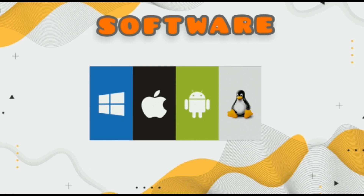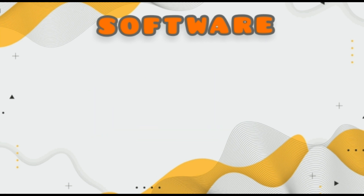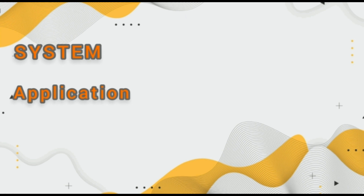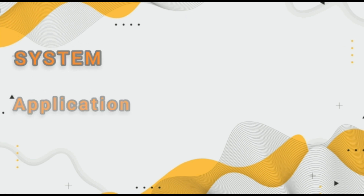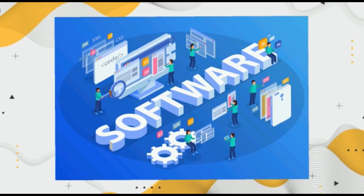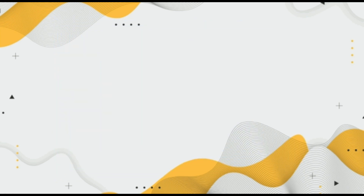Software actually tells the computer what to do. Software can be divided into three kinds: system software, application software, and utility software. When you are listening to music, making a document, or playing games, everything is done by software. System software is responsible for controlling the basic operations of the computer.